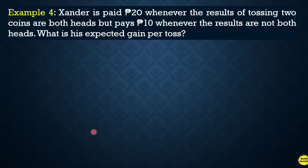Another example — this is now the application portion. By the way, the mean of a probability distribution is also called the expected value or expected outcome. We can apply this concept through problem solving.